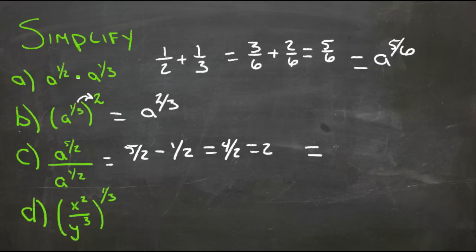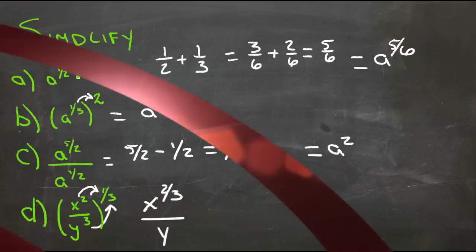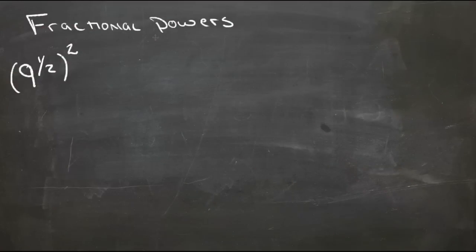And then finally we have x squared over y cubed to the power of one-third. So we take x squared to the one-third giving us x to the two-thirds over y to the third times y to the one, or to the one-third power. Three times a third is one, so just over y.